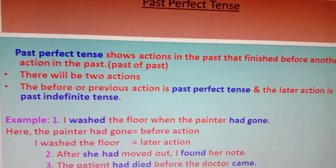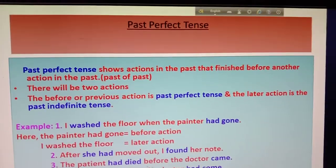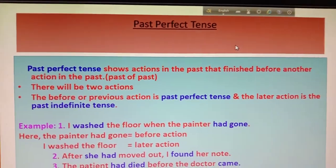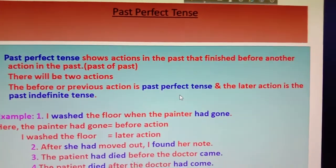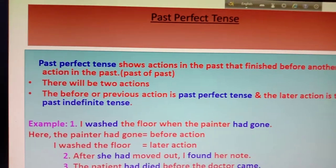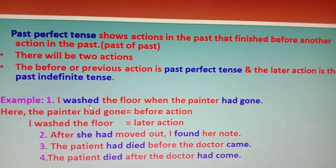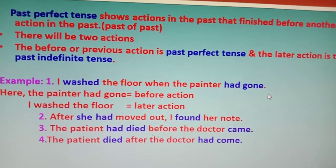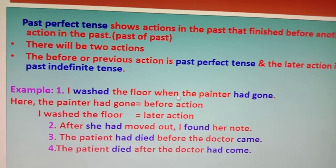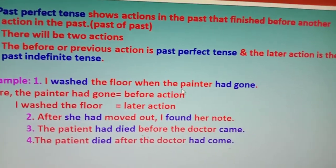The later action is the Past Indefinite Tense. So in the past, when you are going to talk about two actions, you have to use Past Perfect Tense. The before or previous action is Past Perfect Tense and the later action is Past Indefinite Tense — there will be a sequence of actions. The first example is: 'I washed the floor when the painter had gone.' You can see there are two actions: 'the painter had gone' and 'I washed the floor.'